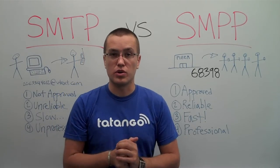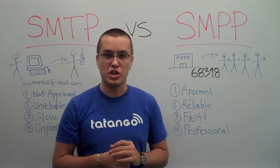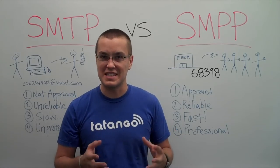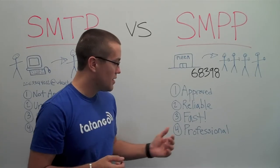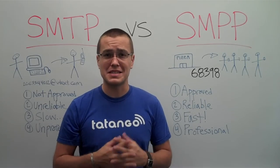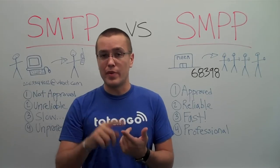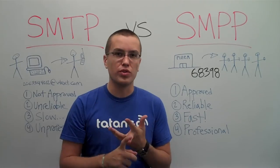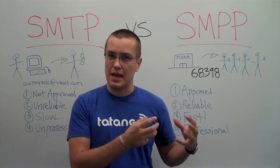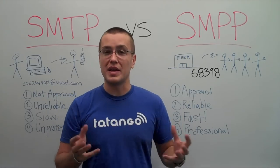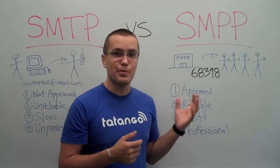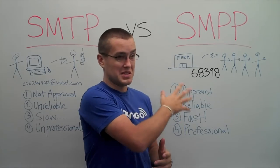Number three, SMPP is fast. Tatango uses SMPP messaging and it sends out to tens of thousands of people in about five seconds — very fast, consistent, and consistently fast. Number four, it's professional. Messages come from a short code like 68398. You can reply HELP or STOP and the message looks really clean. It's the same type of short code used by big brands like McDonald's, Old Navy, political candidates, and even American Idol. So as a small business, you'll feel like a big business using SMPP messaging. Now you know the difference between SMTP and SMPP messaging — and for SMS marketing, SMPP is the only one that matters.